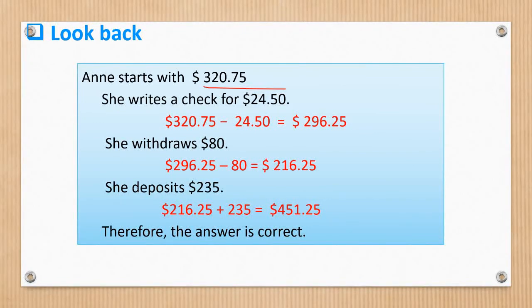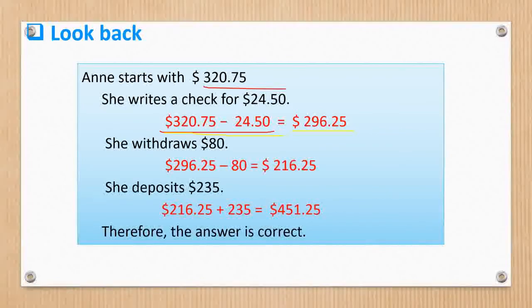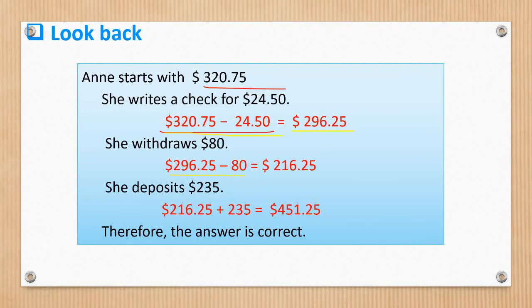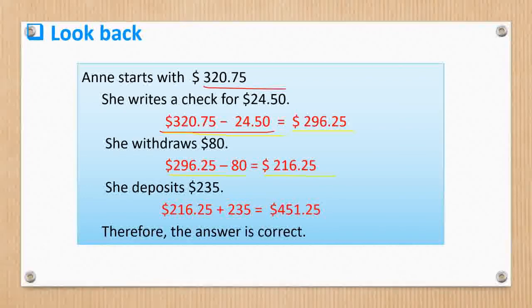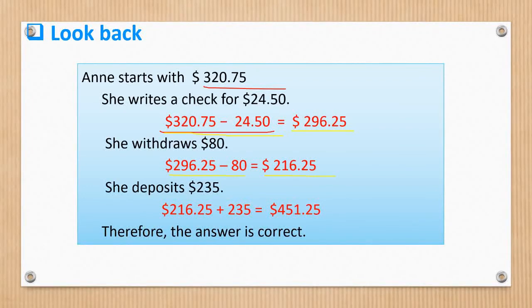So, $320.75 and then she made, so $320.75 minus $24.50 because she wrote a check or she withdrew $24.50. That is why her remaining balance is $296.25. And then after that she withdrew again $80. So, $296.25 minus $80. Now, the remaining balance in her account is $216.25.